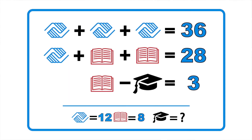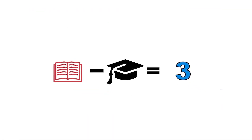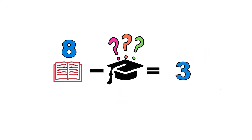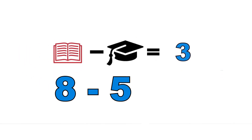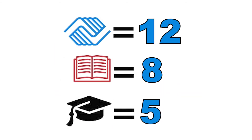Now that we know the book is 8, the last equation is maybe the easiest: 8 minus what equals 3? Think about it and you'll realize 8 minus 5 equals 3, so the cap equals 5. So to summarize: hands equals 12, book equals 8, cap equals 5. You've used logic to figure out the answer to each of these equations. Now it's time for you to try one on your own!